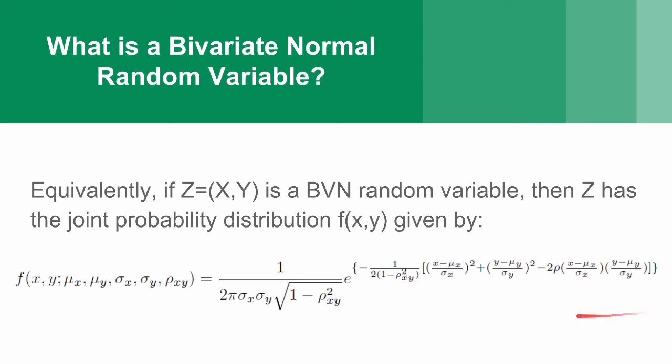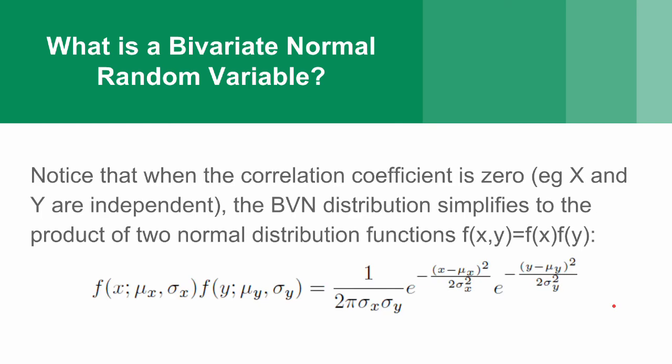You can simplify this quite a lot if you consider x and y independent, because if x and y are independent, then the correlation coefficient is 0. So, you'll have 1 minus 0 here, square rooted, which is going to have 1. Same with up here. And here, you'll have rho 0, so this entire term cancels out. And that'll leave you with this right here, which you might recognize as just the product of two normal random variables x and y.